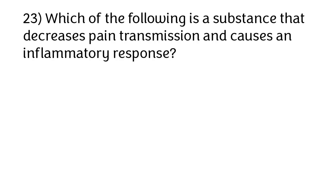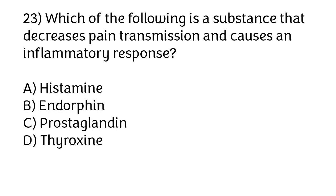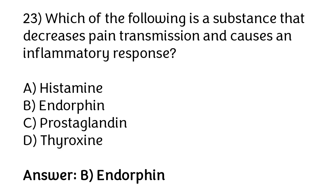Which of the following is a substance that decreases pain transmission and causes an inflammatory response? Options: histamine, endorphins, prostaglandin, thyroxine. The correct answer is option B — endorphins are a substance that decreases pain transmission and causes an inflammatory response.